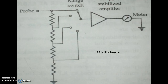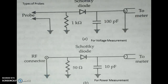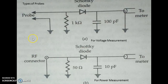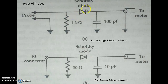Depending on the probe type, the measurement differs. If the probe is configured for voltage measurements, a relatively high impedance is used — one kilo ohm as you can observe. For power measurement, a 50 ohm impedance is used, and a Schottky diode aids in the rectification process.